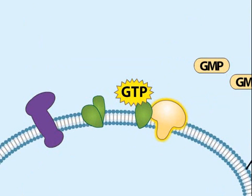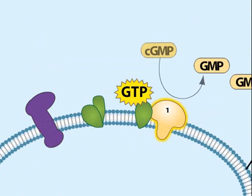Signal transduction cascades have enormous amplification abilities. In this example, each molecule of photoexcited rhodopsin can activate several hundred transducin molecules, thus activating a large number of phosphodiesterase molecules. The catalytic capacity of phosphodiesterase is great — one molecule can hydrolyze more than 4,000 molecules of cyclic GMP per second.